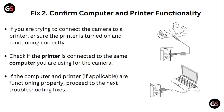Fix 2: Confirm computer and printer functionality. If you're trying to connect the camera to a printer, ensure the printer is turned on and functioning correctly. Check if the printer is connected to the same computer you're using for the camera. If the computer and printer are functioning properly, proceed to the next troubleshooting fixes.